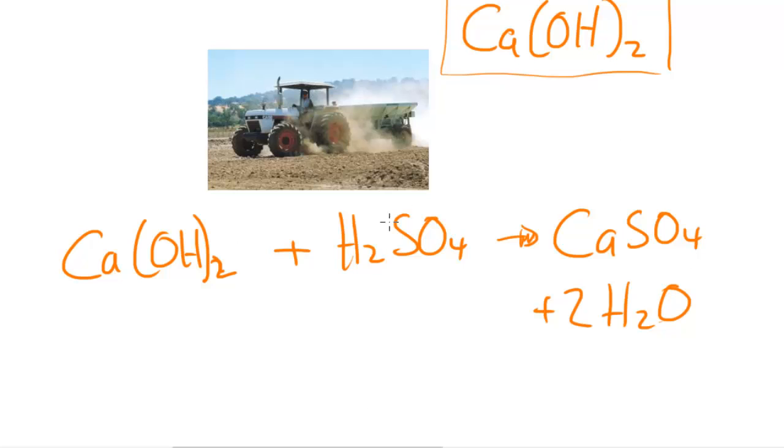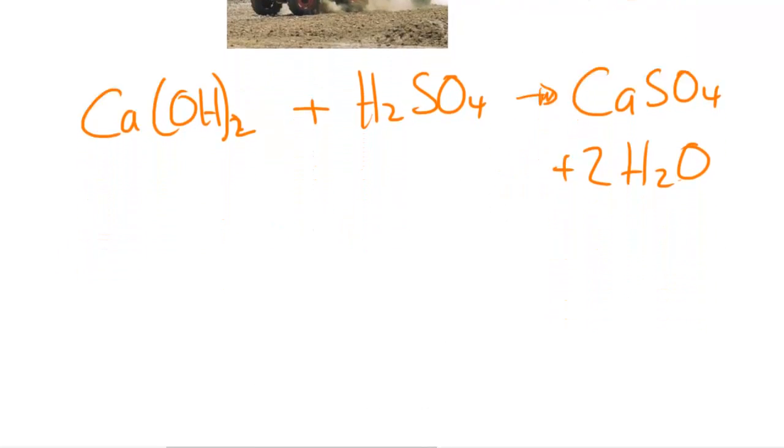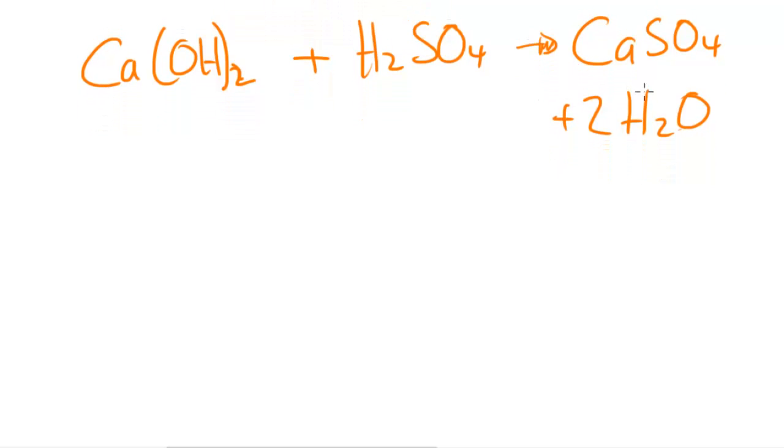So this is what would happen in this particular reaction. We can actually convert this into an ionic equation so that we can actually see what's going on with the protons and the hydroxide ions. The way we can convert this into an ionic equation is basically by separating all these different parts of the equation into ions and then simplifying it.